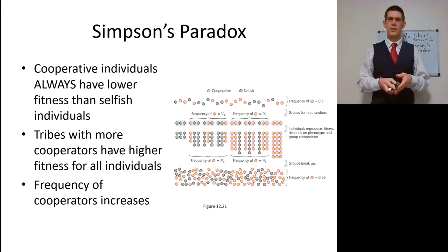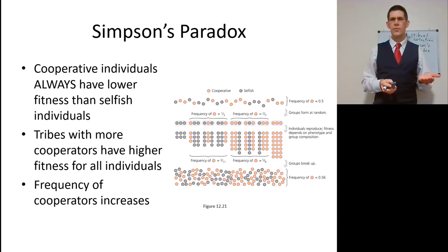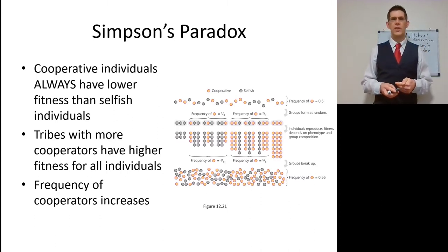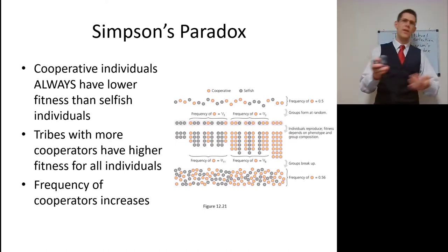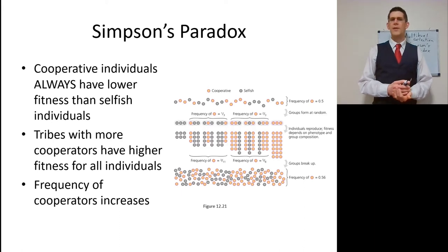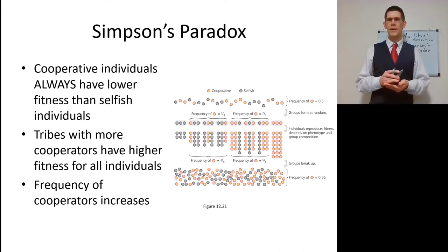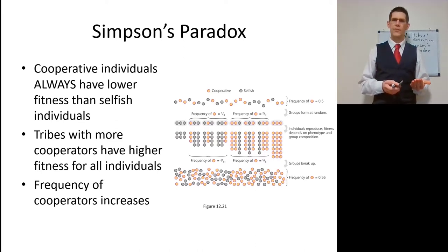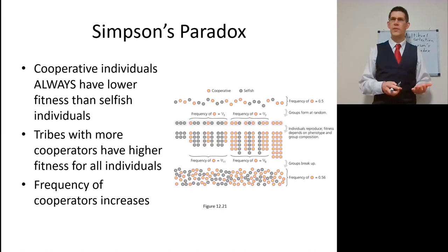Let's say we have a bunch of bacteria where the frequency of the cooperative allele is about 0.5 — 50 cooperative, 50 selfish. They mix randomly. Cooperative individuals always have lower fitness in any one group than selfish individuals. They're putting all the work in but not getting the benefits. However, tribes with more cooperators have higher fitness for all individuals. After just one generation, the frequency of the cooperative allele has gone up to 0.56 instead of 0.5. The frequency of cooperators increases every generation, even though in every single group the selfish ones are getting the benefits.